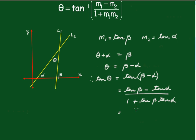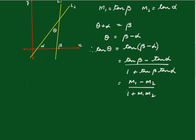But we know that tan of beta is m1 and tan alpha is m2 over 1 plus m1 m2. Therefore, theta must be the inverse tan of m1 minus m2 over 1 plus m1 m2.